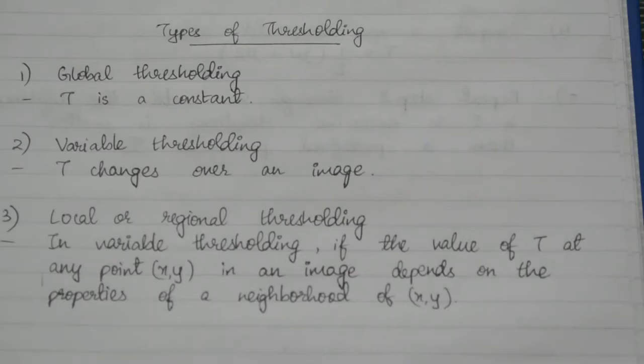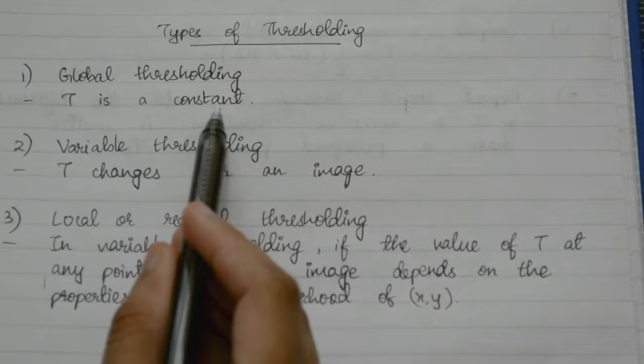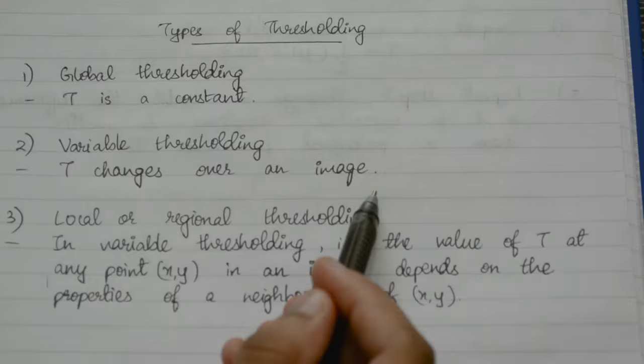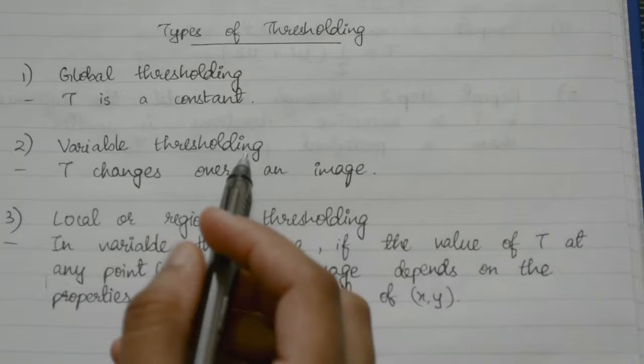Now let's look at the different types of thresholding. The first one is global thresholding. If the t value is constant throughout the image, then it is known as global thresholding. If the t value changes over an image, that is if we have more than one threshold value, then that is called variable thresholding.